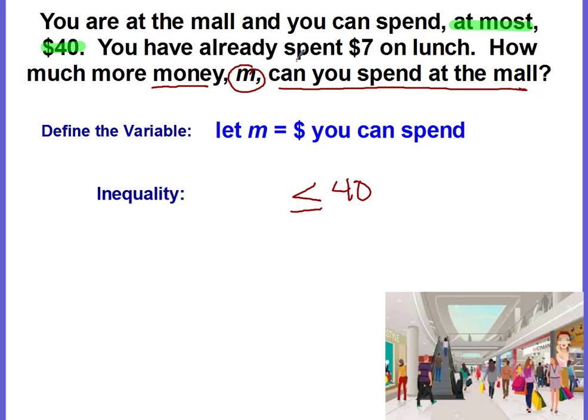So we know that we can spend at most forty dollars. We have already spent seven dollars. And we want to know how much more money we can spend. So how much more is our clue word for addition. So we're going to take m plus seven and that should be less than or equal to forty. Now you could switch it by the commutative property and have seven plus m, that's the same thing, is less than or equal to forty. And then you would solve the inequality and graph your solutions on a number line.